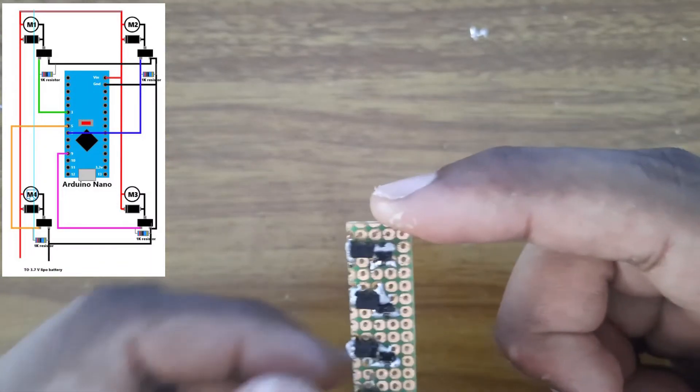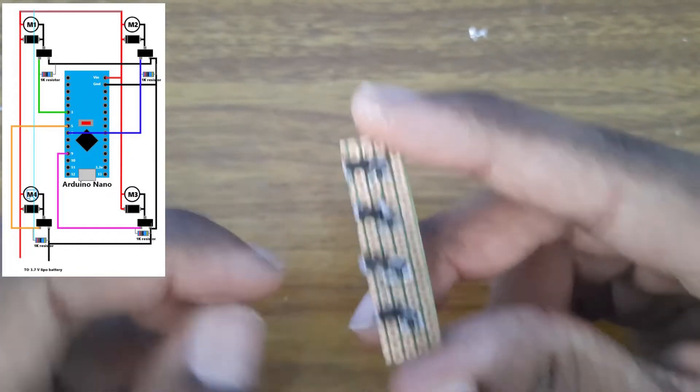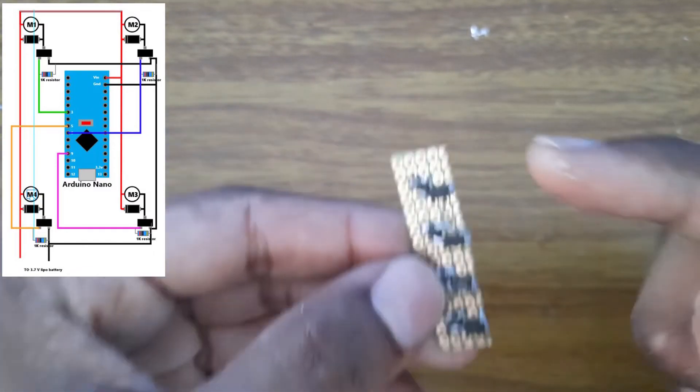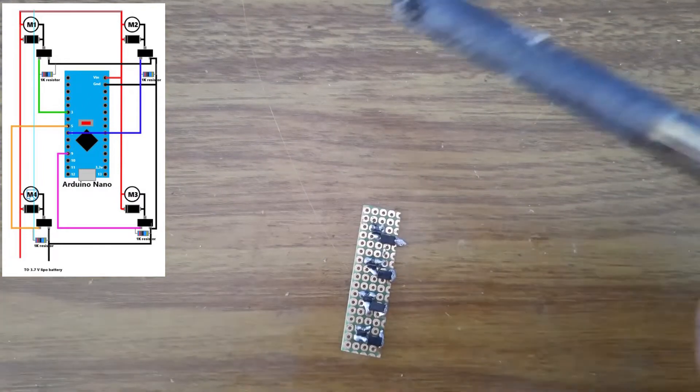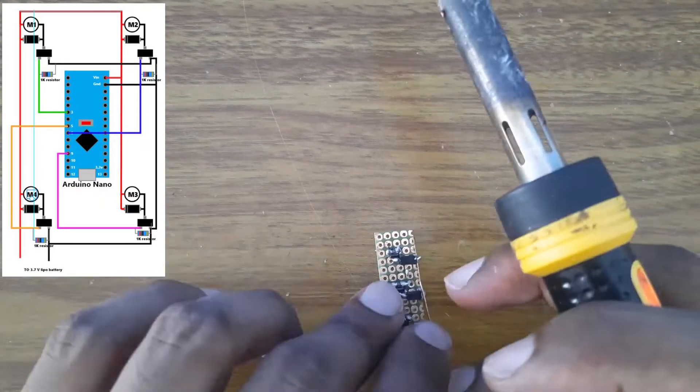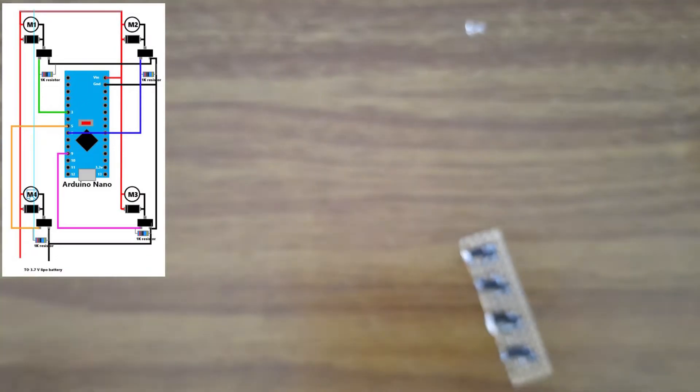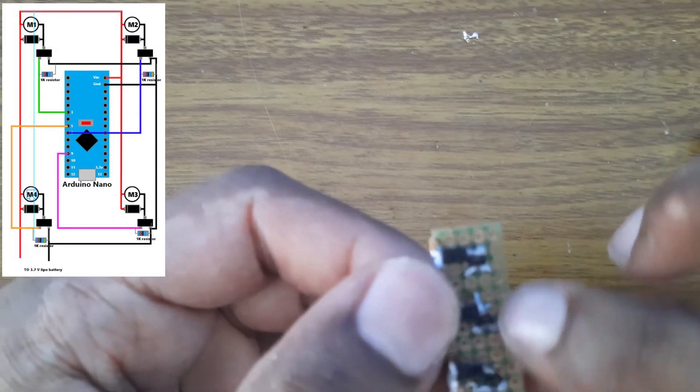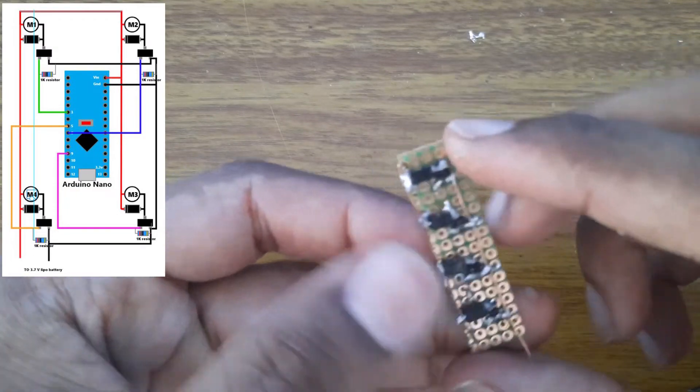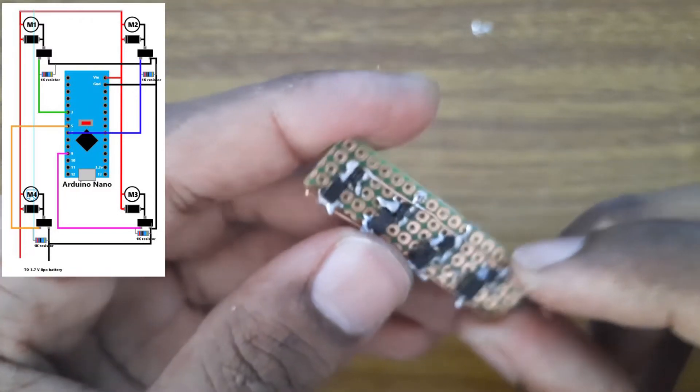Once you have done the connection as I have done for the first one and you have made four of it like this, what you need to do is solder the left leg of the MOSFET together. Now that's done. We have already shortened the positive and the negative part of the MOSFET.